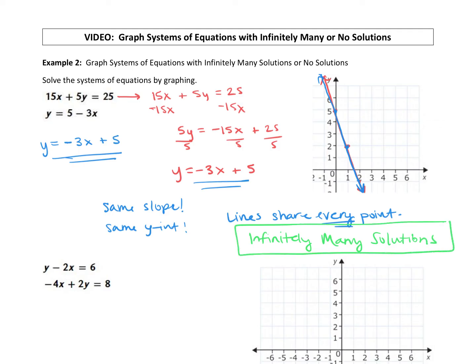So basically, if you notice that your two lines have the same slope and they have the same y-intercept, we can predict they will be graphed in the exact same spot, which will lead us to our infinitely many solutions answer.